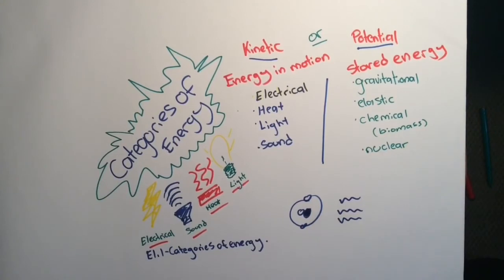So what have we learned so far? Energy comes in many forms which can be organized into two categories: kinetic, the energy of motion, or potential, stored energy. Okay, so that's a wrap. Stay tuned for some more episodes coming up. Next time we're going to look at kinetic energy in a bit more detail.